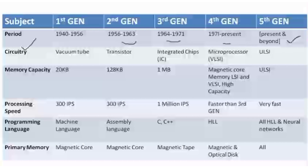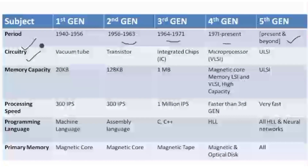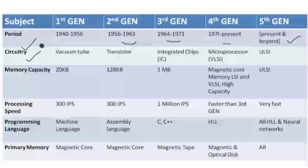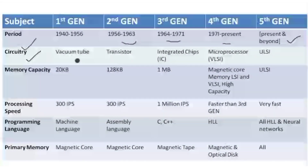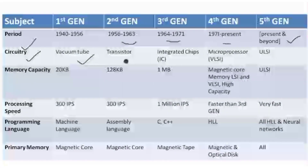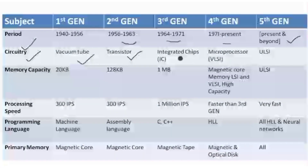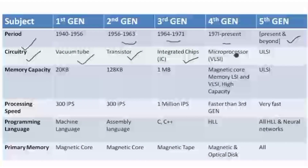Moving on, the next property is circuitry. Circuitry means what important component was used to build that type of computer. In the first generation we used vacuum tubes, in the second generation we used transistors, and in the third generation we got integrated chips, also known as ICs.